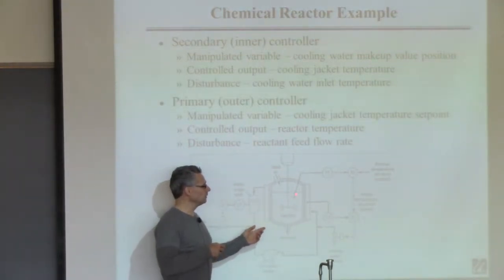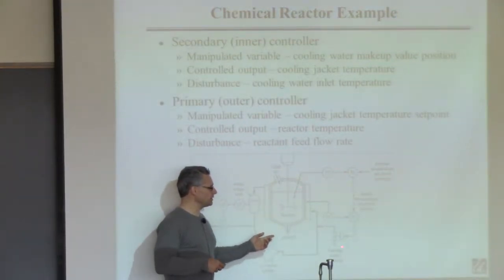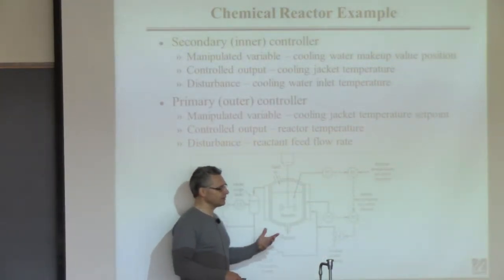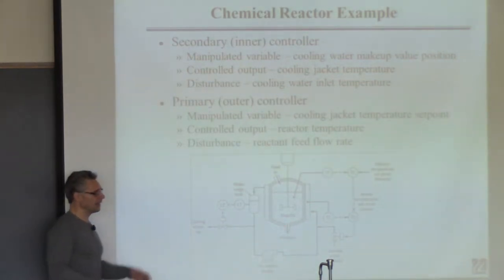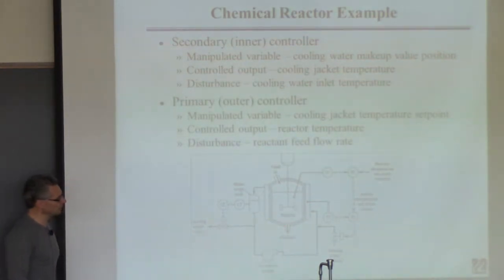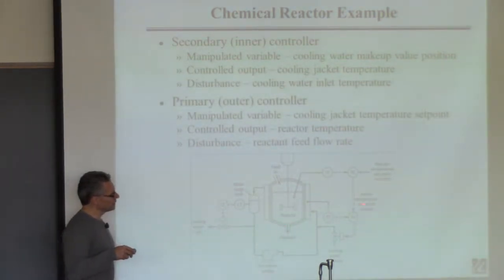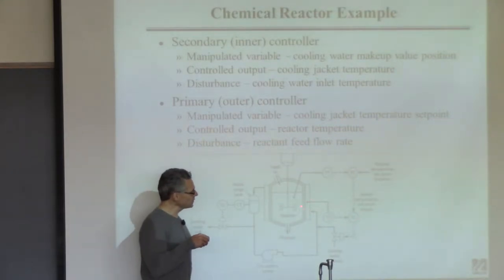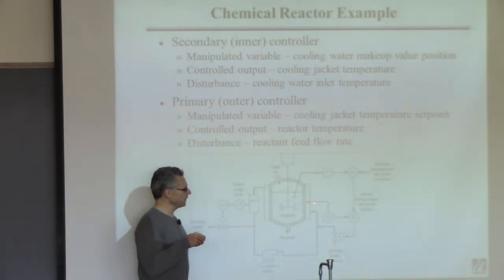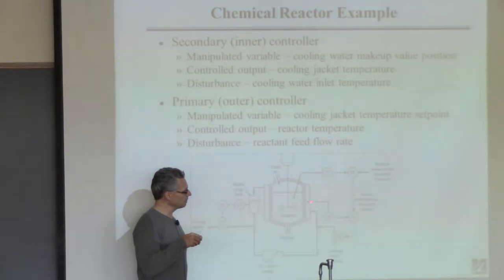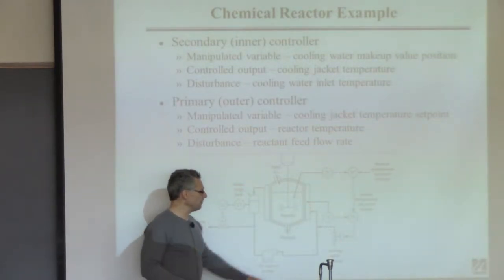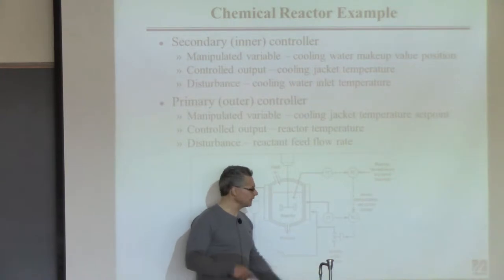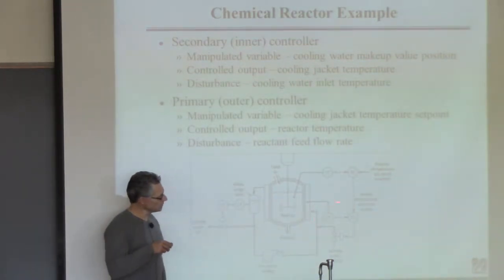Eventually we'll say uh-oh, we better change that, and we can change it but that'll take some time. It has to do with the residence time of the reactor. But an alternative strategy is to measure the cooling water itself — measure the temperature of the cooling water and try to control that. This controller measures cooling water temperature and attempts to control it by manipulating the water makeup. So this little controller just tries to keep cooling water temperature constant.